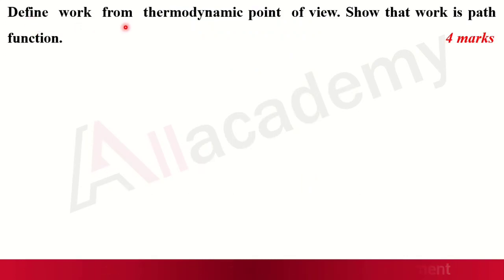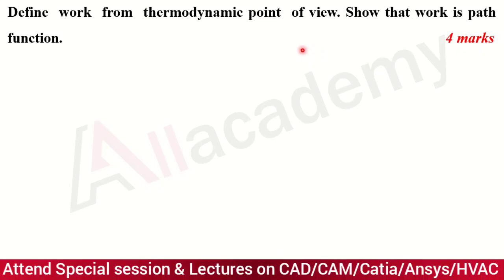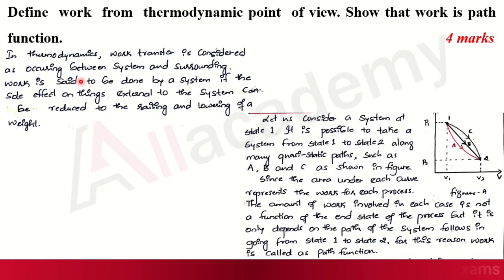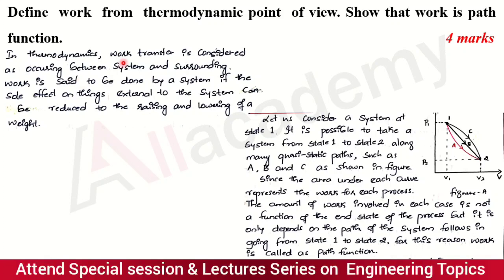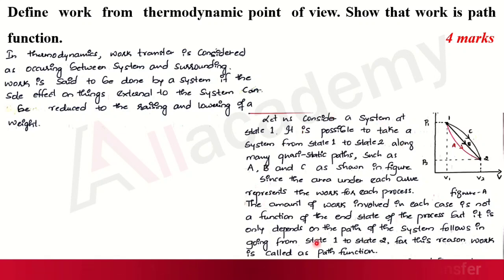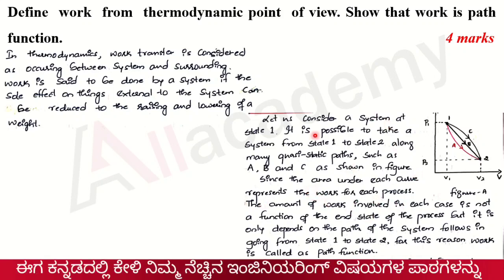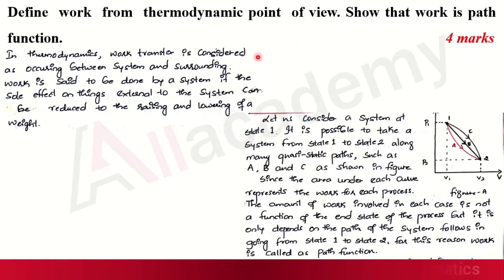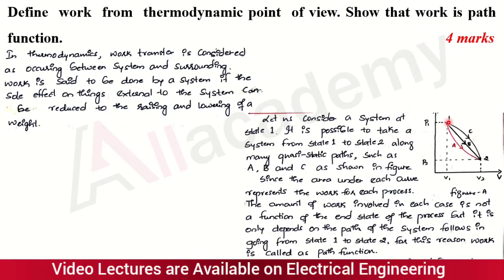The first question is: define work from a thermodynamic point of view and show that work is a path function. This question is asked for four marks. You have to write the definition of work from a thermodynamic point of view, then explain with a PV diagram why work is called a path function. The marks distribution is one mark for the definition and three marks for showing that work is a path function.